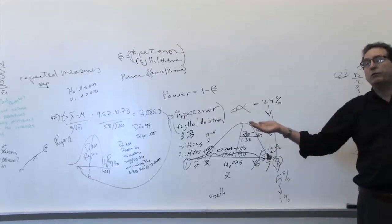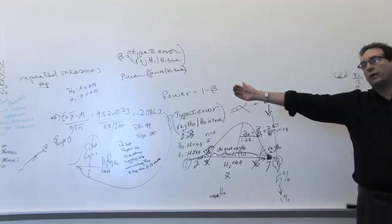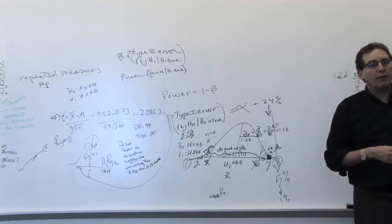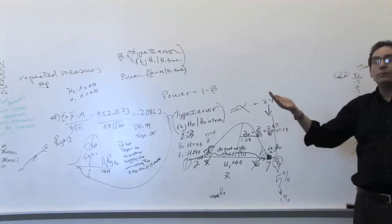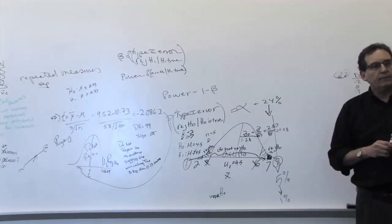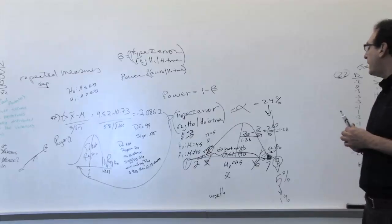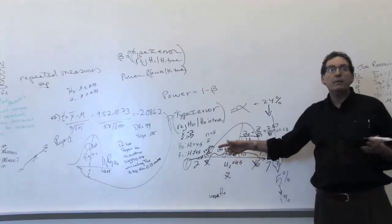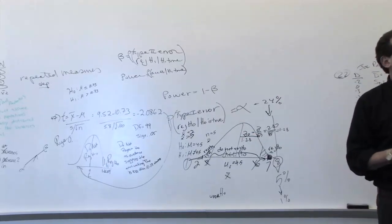By making the acceptance region more liberal or further apart, then you're making it easier and easier to reject H1. When you reject H1 under all conditions, including the conditions when it's supposed to be accepted, you're making the type 2 error with beta. So basically the key phrase is when you make it easier to reject H1? When you make it easier to accept H0, at the same time you're making it easier to reject H1, so that probability has to go up.